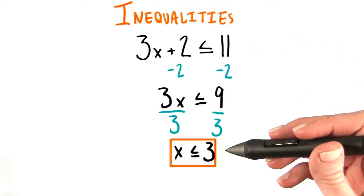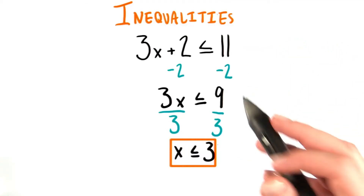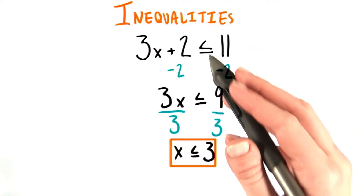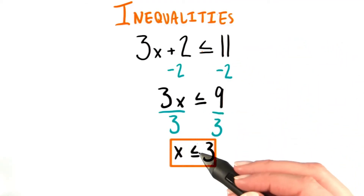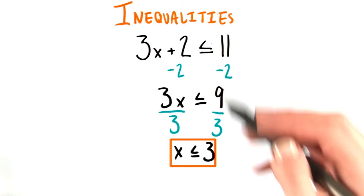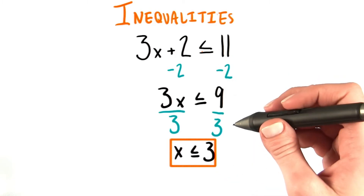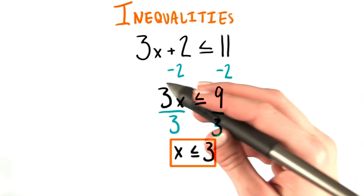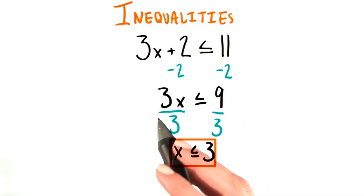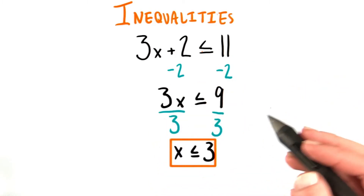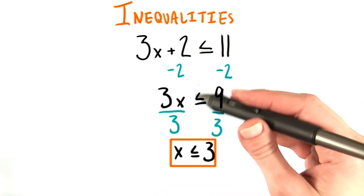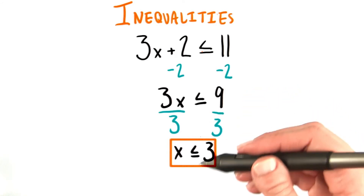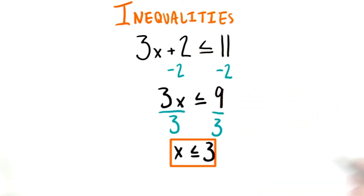We treat this just as if we were solving an equation, except that, of course, we have an inequality sign running throughout. We're dividing by a positive number, this positive 3, not a negative 1, so we have no funny business with the signs.